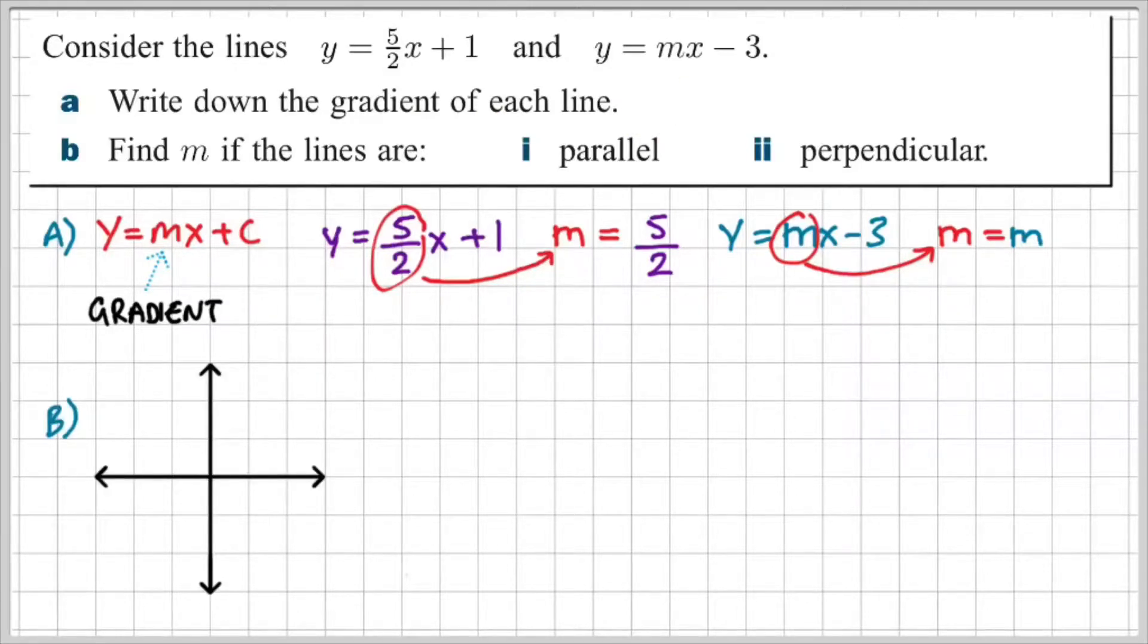So this is what I've got. If I draw a Cartesian plane and I draw two lines, these two lines are parallel. Now since they're parallel, the slopes or the gradients have the exact same value. They have the same measure of steepness.